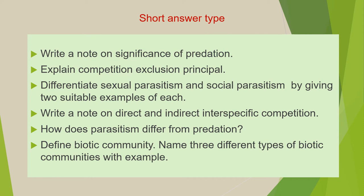Next is: differentiate sexual parasitism and social parasitism by giving two suitable examples of each. Next is: write a note on direct and indirect interspecific competition. Next is: how does parasitism differ from predation. Next is: define biotic community and name three different types of biotic communities with examples.